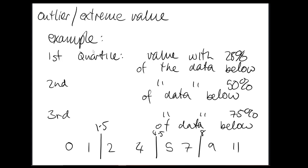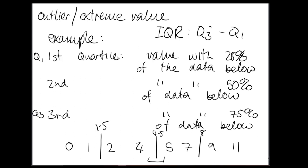Bart asks if there are thirds as well as quarters. Tess explains that quantile (as opposed to quartile) lets you pick any percentage — a 10% quantile has 10% of data below it. Quartiles are typical because we use the median as a central measure. The interquartile range (IQR) is Q3 minus Q1, encompassing the central 50% of the data. In this example, the IQR is 8 minus 1.5, which equals 6.5.